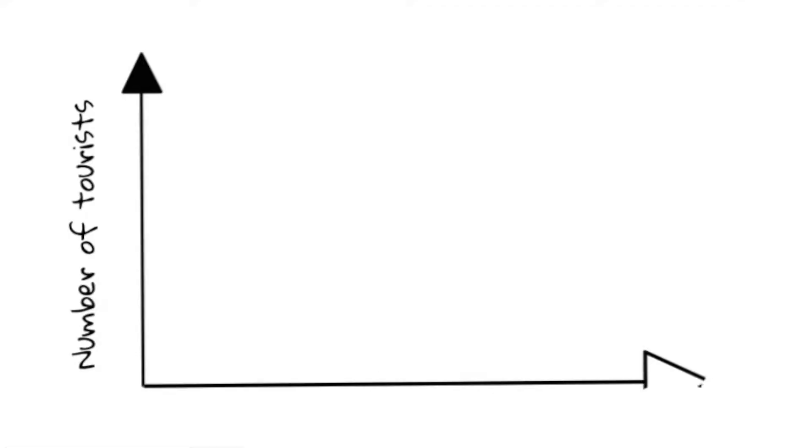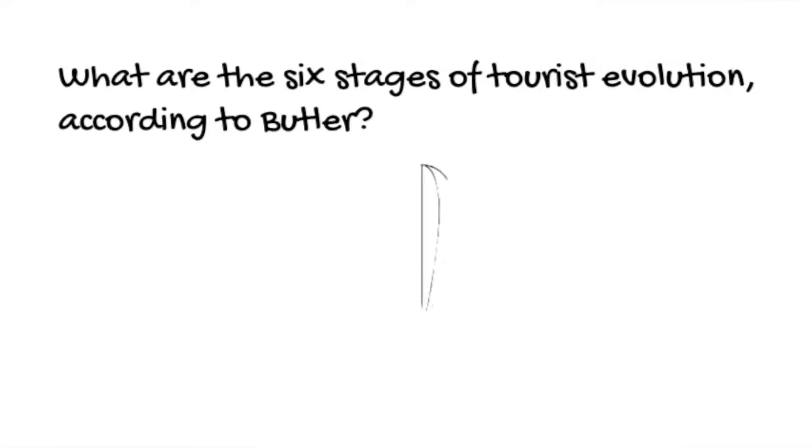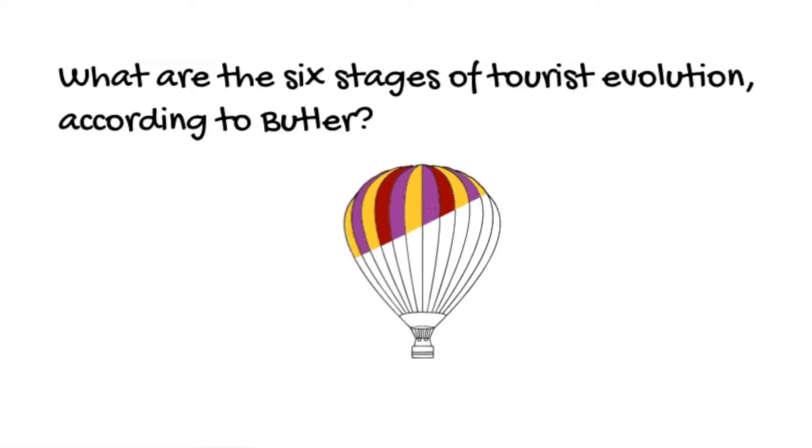As you can see, there are no specific numbers on the axes, which means that the model can be easily applied to a number of different situations and contexts. The intention of this model is that people who work in the travel and tourism industry — a range of different stakeholders — can use this as a form of guidance to help them understand how tourism development occurs. Butler wanted to demonstrate that tourism development, as with anything in life, is not a static process — it's fluid.